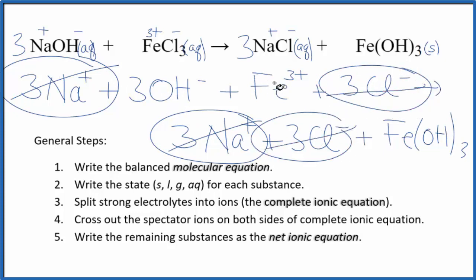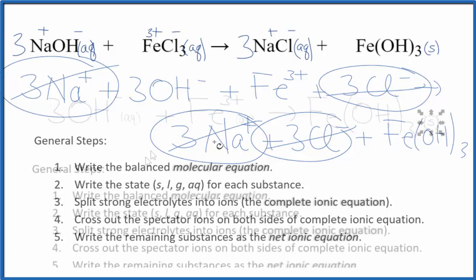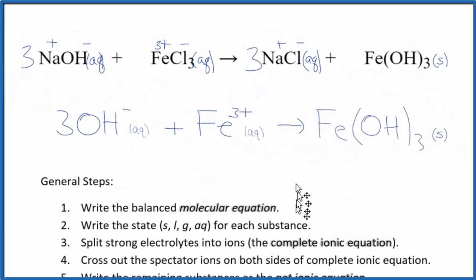And what's left is the net ionic equation for NaOH plus FeCl3. I'll clean this up and write the states in. We'll have our net ionic equation. And this is the balanced net ionic equation for sodium hydroxide plus iron 3 chloride.